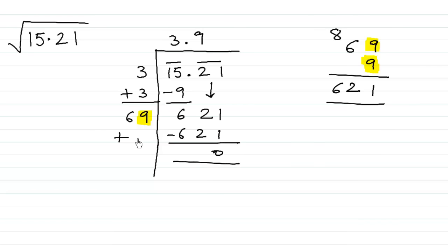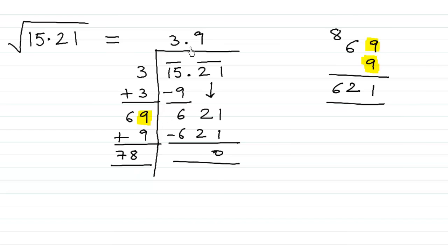So 69×9=621, and we get a remainder of 0. Adding 9: 9+9=18, and we get 78. The answer to our question is 3.9. If you ignore the decimal point and double 39 you get 78, which confirms the answer.